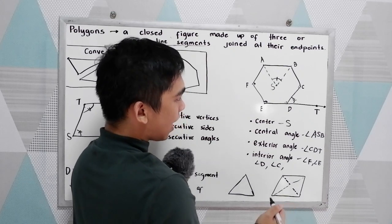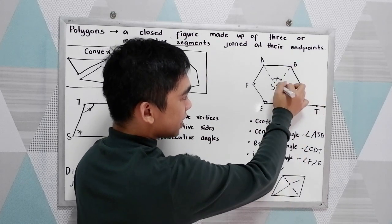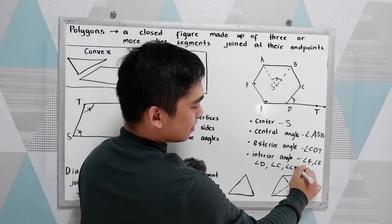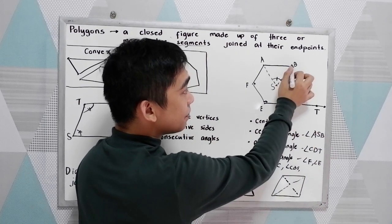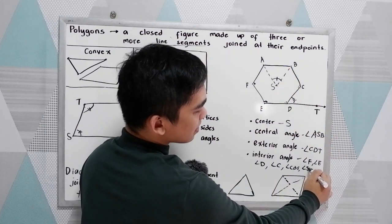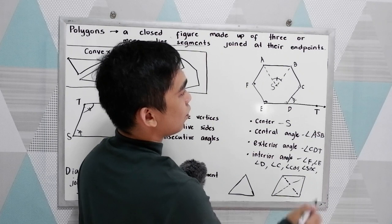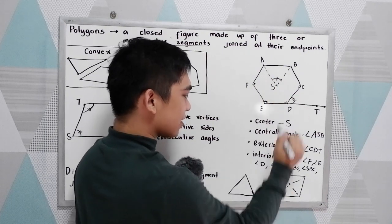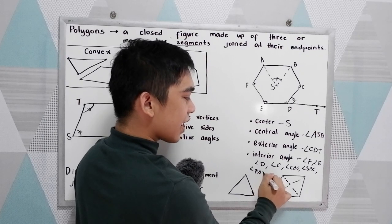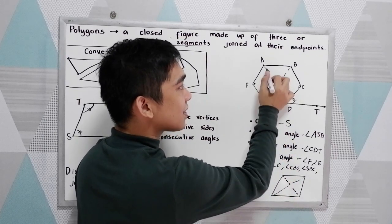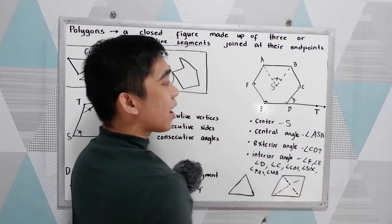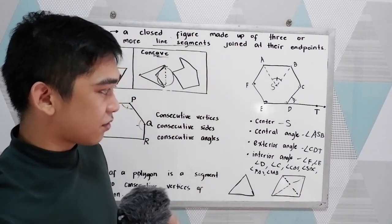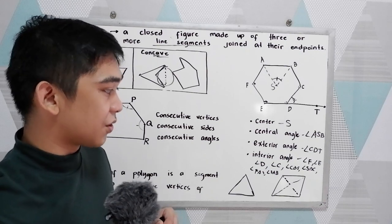More examples of interior angles include angle CBS (or angle SBC), angle FAS (or angle SAB), and so on. Those are the differences between the center, central angle, exterior angle, and interior angles.